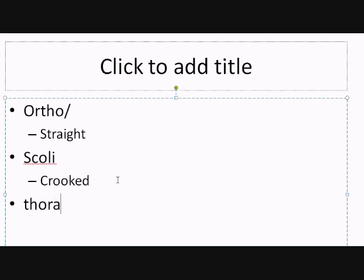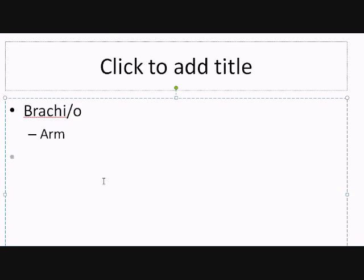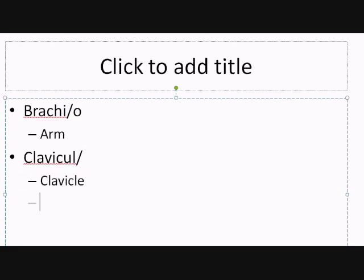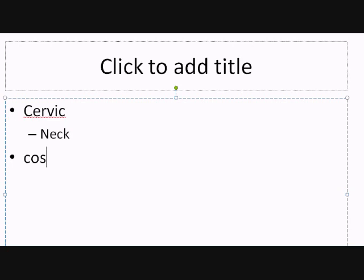'Thorax' refers to the chest. 'Brachy' refers to the arm — you may see this frequently if you go into nursing. We've mentioned brachial and antecubital previously and we'll get to the brachialis muscle later. 'Clavicle' — that root is very straightforward. 'Cranio' refers to the skull. 'Cervic' or 'cervix' refers to the neck — we've already mentioned that a few times.